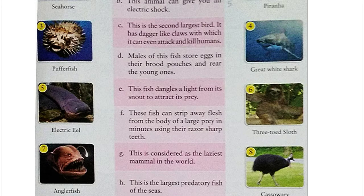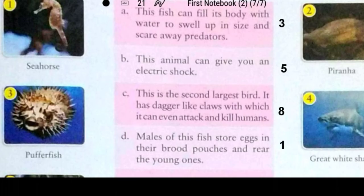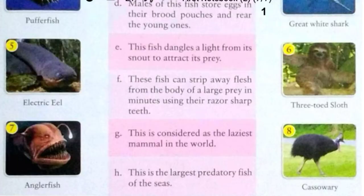Question C: this is the second largest bird. It has a dagger-like claw with which it can even attack and kill humans. The answer is cassowary, shown in picture number 8. Question D: males of this fish store eggs in their brood pouches and rear the young ones. The answer is seahorse, option 1. Question E: this fish dangles a light from its snout to attract its prey. The answer is anglerfish, option 7.